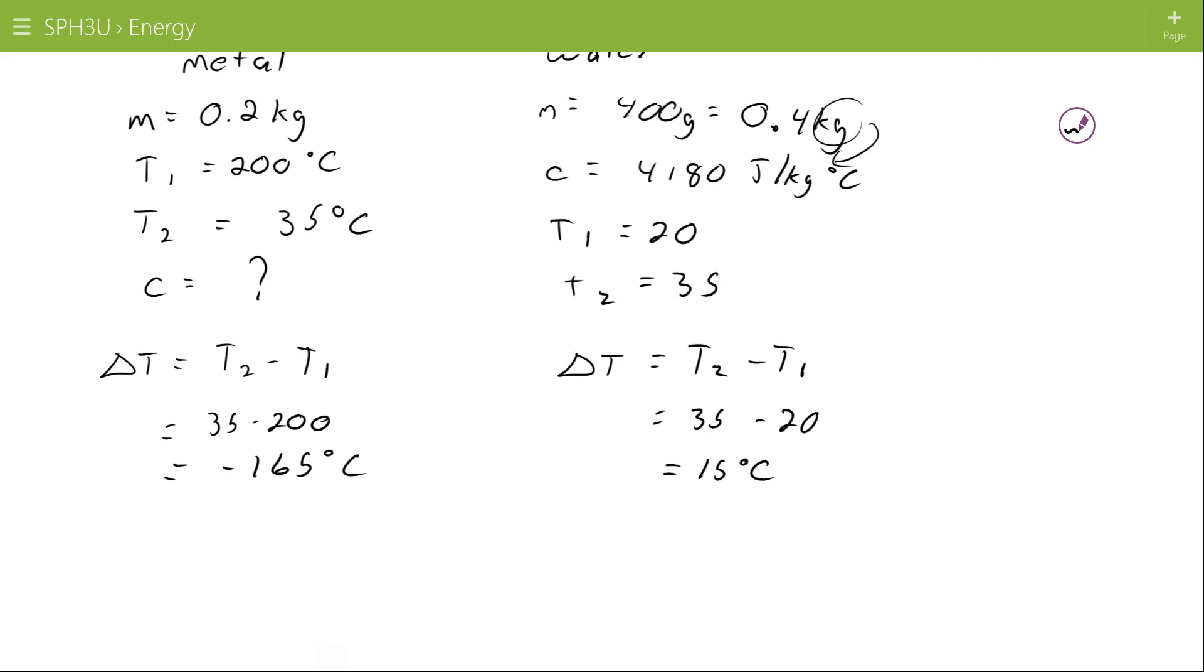So remember, as these things come to equilibrium, the heat lost by one material is gained by the other material. We're assuming again we're in a closed system where no energy is being lost to the environment. So Q lost is going to be equal to Q gained.